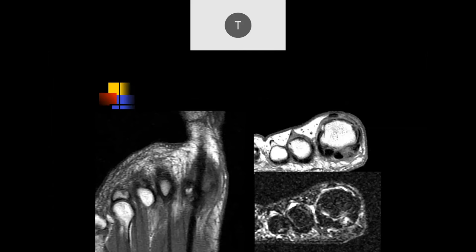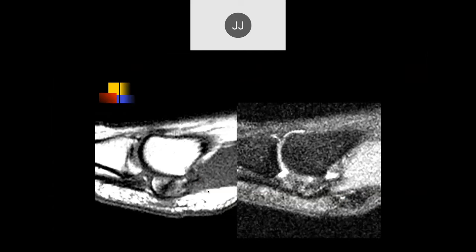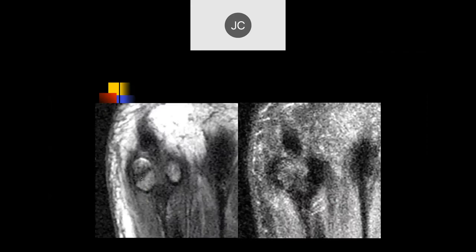This patient has foot pain. Looking at the base of the first MTP joint, there's an injury to the tibial hallucal sesamoid — a sesamoid fracture from running. Here's a more chronic case with injury to the sesamoid as well. Some of these are operated on with tiny screws to put them back together because some will not heal. These sesamoid fractures are not easy to heal.